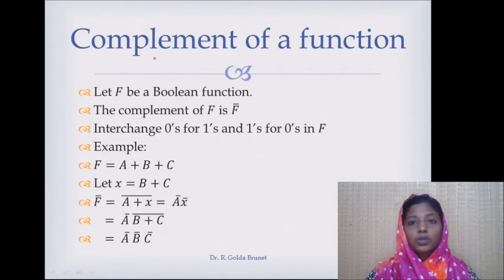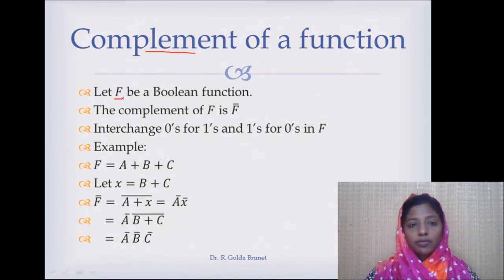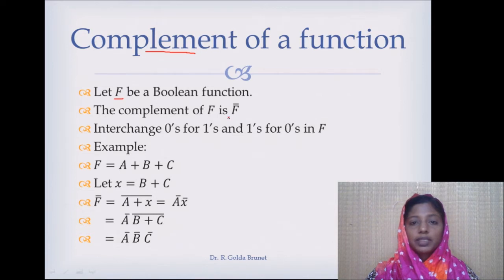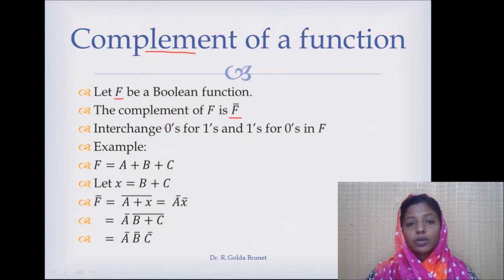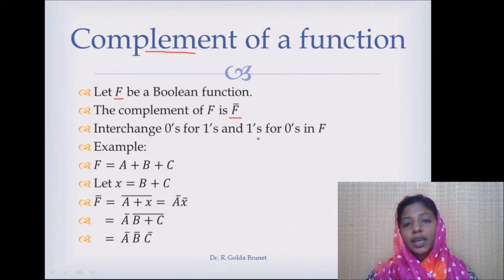Next, let us see how to compute the complement of a Boolean function. Let F be the Boolean function. Then the complement of F will be represented by F̄. In F̄, we will interchange all the zeros to ones and ones to zeros. All the zeros in F will be switched to ones in F̄, and similarly all ones in F will be changed to zeros in F̄.